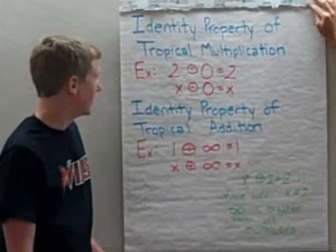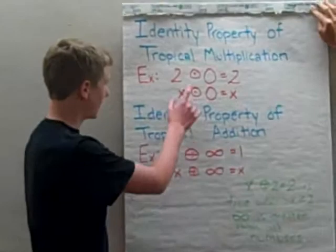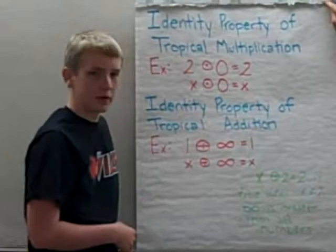The identity property of tropical multiplication states that any number tropically multiplied by zero will equal that number, which is the same as the identity property of classical addition with the zeros. So we have two tropically multiplied by zero is two, and then x, any number, tropically multiplied by zero is x.